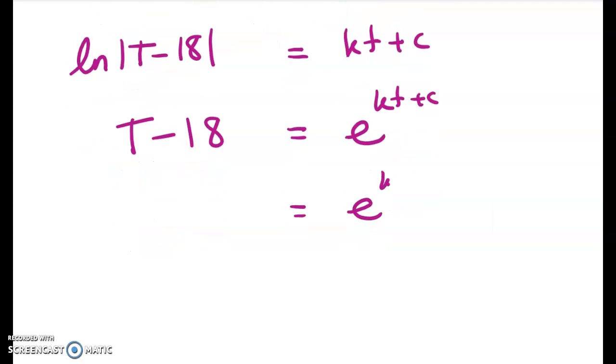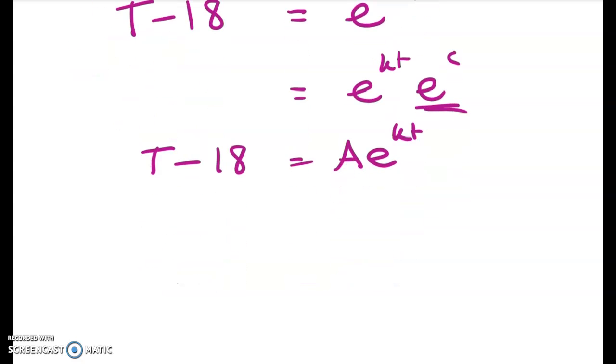Now that's equal to e to the kt times e to the C, and we can rewrite that constant as big A. So we get down to here: the temperature is equal to 18 plus Ae to the kt.